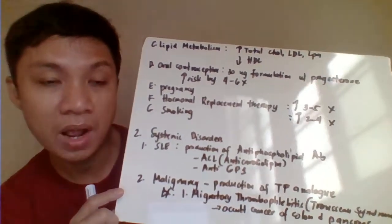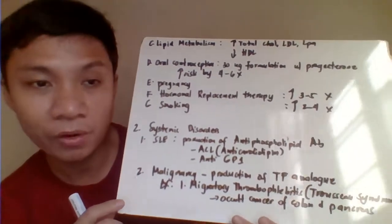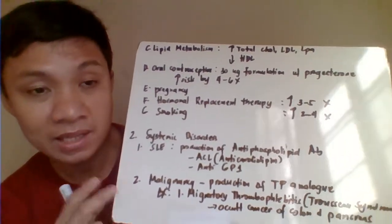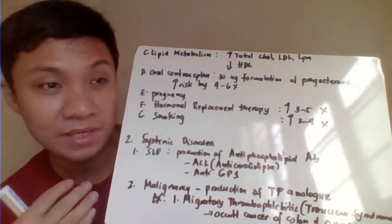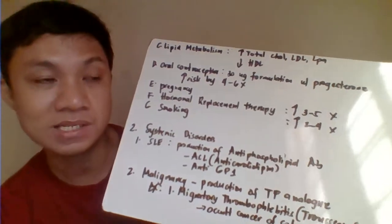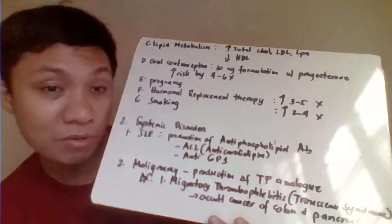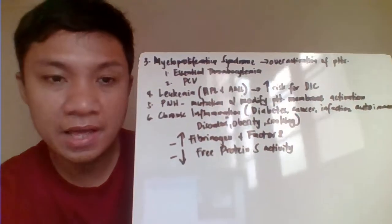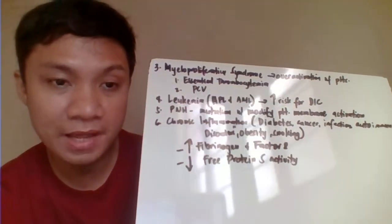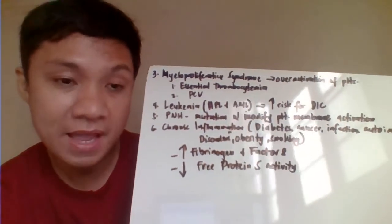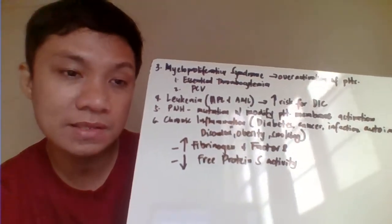Malignant solid cancers — such as migratory thrombophlebitis or Trousseau syndrome, considered an occult cancer of the pancreas and colon — produce tissue factor analogs. Tissue factor facilitates the clotting process by binding with Factor VII, resulting in thrombosis. Myeloproliferative syndromes like essential thrombocythemia and polycythemia vera result in overactivation of platelets, leading to thrombosis.